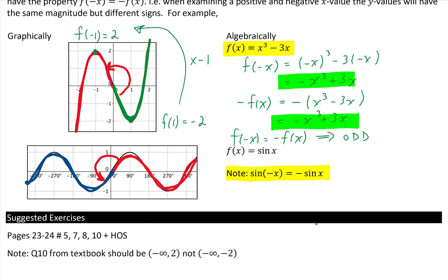For this section, here are some questions from your book, and there is also a handout sheet. For question 10, some textbooks have the wrong intervals — you should have negative infinity to 2, and not negative infinity to negative 2. You'll understand once you look at the question.